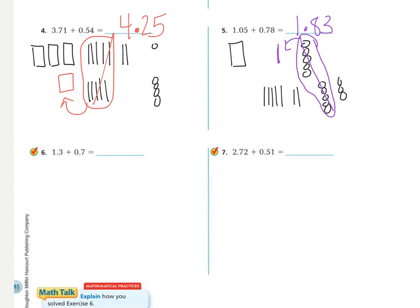And number 6. I have 1 whole. And 3 tenths. 1, 2, 3. And then 7 tenths. 1, 2, 3, 4, 5, 6, 7. And no hundredths. So, I start at the tenths area.